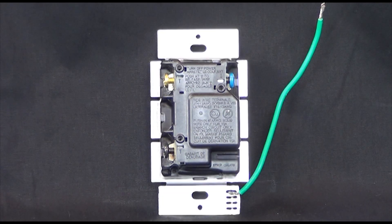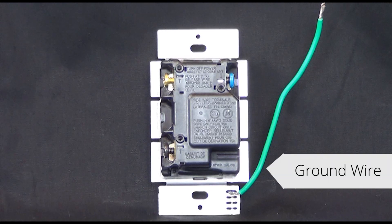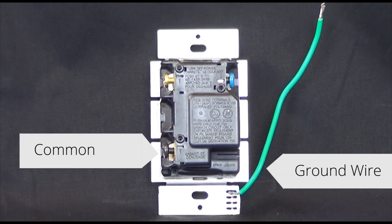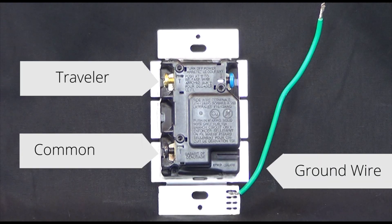On a Maestro dimmer, there are four connections. The green wire is your ground. There is one black screw, there is one brass screw, and there is one blue screw.